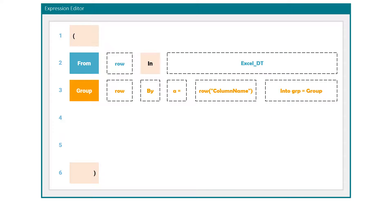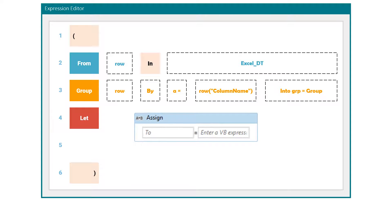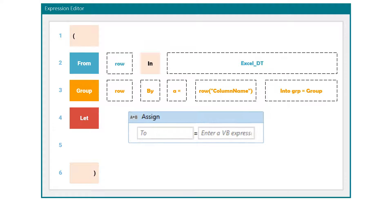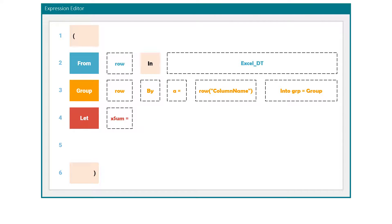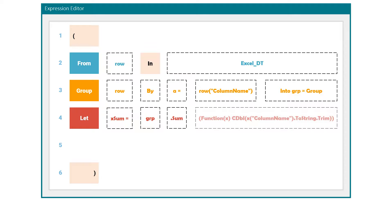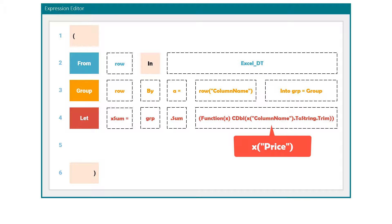The next statement is the 'let' statement. Using this statement we can save data into a variable — its function is like an assign activity in UiPath. We define first a variable, for example xsum. Then we use the group variable defined in the previous statement, then set the function sum. After the function we write the same query as we did in the last two parts of the video. The column name in this statement should be 'price' because we want to calculate the numbers from that column.